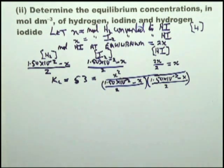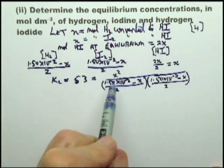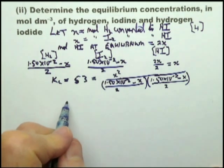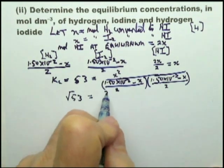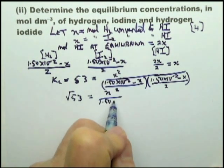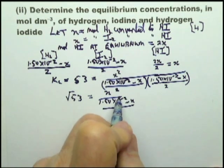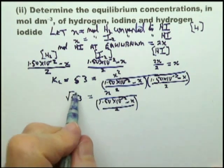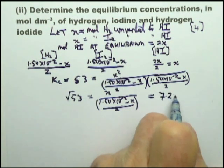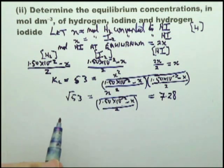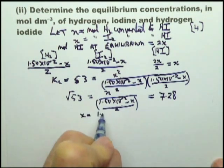When I first did this and looked at it, I multiplied all this out and got a quadratic equation. Then I realized that IB students in chemistry are not expected to be able to solve quadratic equations. So I looked back at this and I realized that this is a perfect square. And so you take the square root of that, square root of 53, which equals 7.28. And then I solve this equation in x, which equals 1.18 × 10⁻².